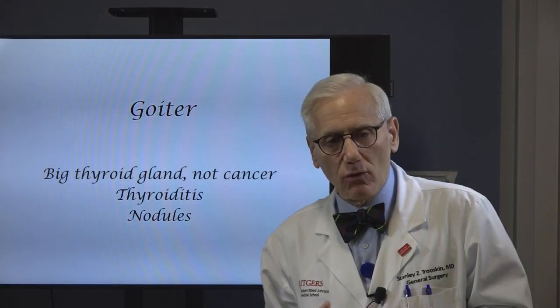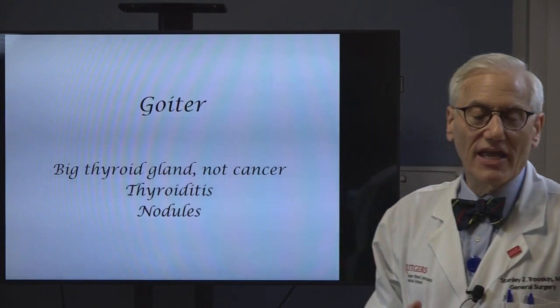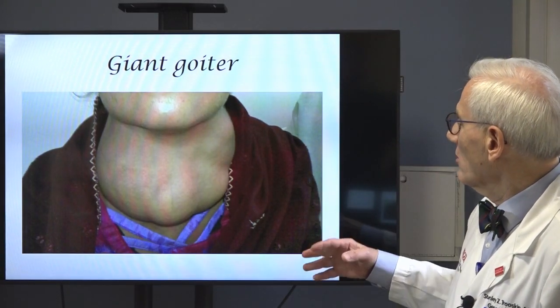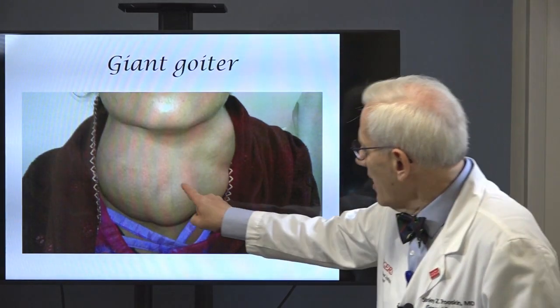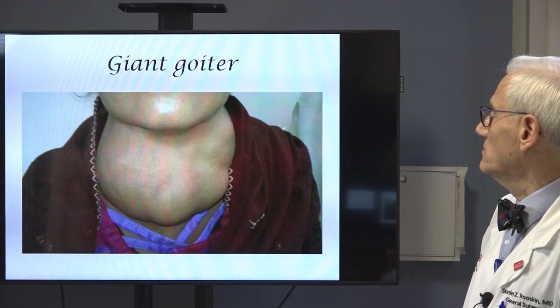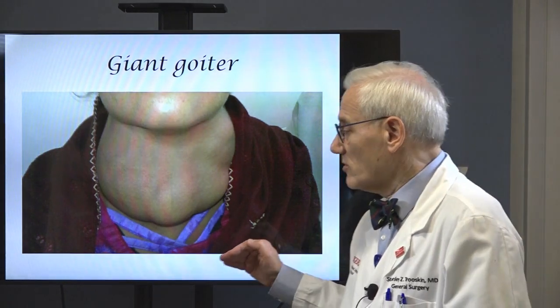Now the first topic we're going to talk about is the term goiter. Goiter means the thyroid gland is big, but it's not cancer. There are two ways the thyroid gland gets big. The whole gland can get enlarged when it gets inflamed. Inflammation of the thyroid is called thyroiditis. The thyroid can also get big because it's made of nodules. Here's a patient who has a giant goiter, an enlargement of the thyroid that's not cancer, and you can see through the skin the outline of multiple thyroid nodules.